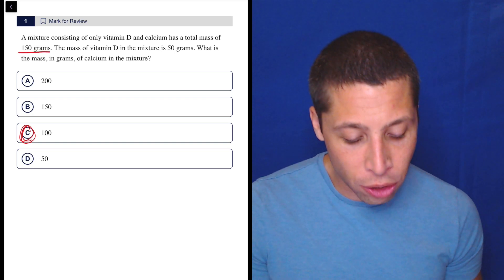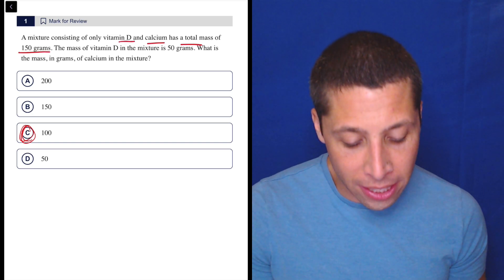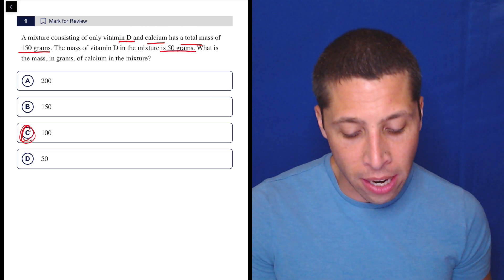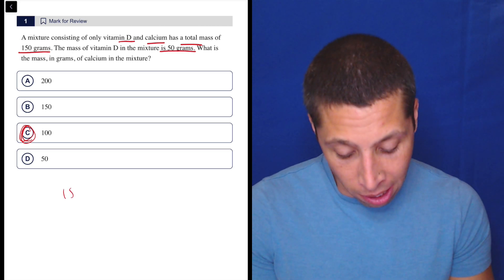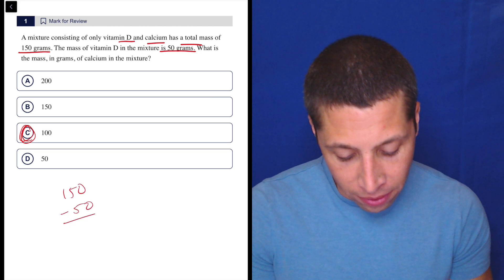But it's 150 total of both vitamin D and calcium. We know the vitamin D is 50. So what's left over? It's 150 minus 50, which is 100.